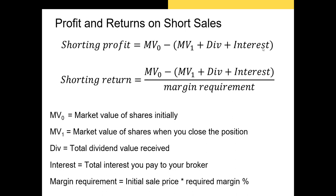For shorting, we have two formulas. Shorting profit equals the market value at which you sold your shares on day one, minus the value you paid to buy those shares back, minus any dividends paid, minus interest paid to your broker — since you're essentially shorting on margin. To calculate the return on your shorting activity, divide your profit by the margin requirement, which is the initial sale price times the required margin percentage.